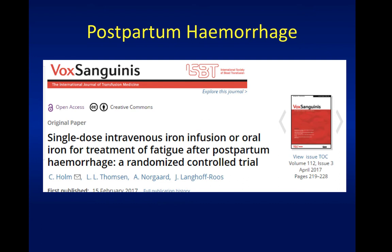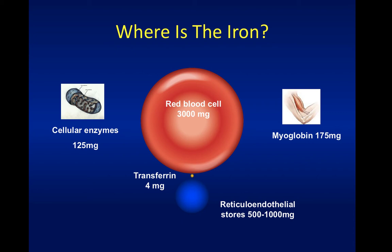Briefly on acute blood loss: there are now approximately eleven studies looking at the use of intravenous iron for the treatment of postpartum anaemia, many using blood loss as their inclusion criteria. A recent study published this year showed superior patient-centred outcomes including improvements in fatigue and laboratory parameters. The rationale is that most of the iron in your body is in your blood, so a large volume of blood loss during childbirth results in acute iron loss.